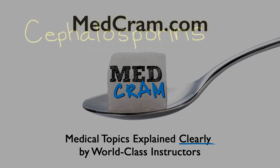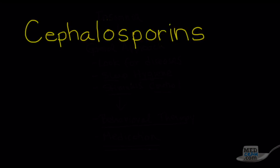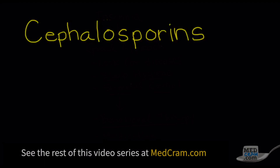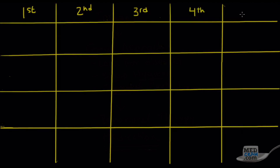Welcome to another MedCram lecture. We're going to talk about cephalosporins and specifically the different generations, some representative antibiotics in each class, and what are the unique things about those generations and their coverage. There are five generations of cephalosporins: the first, the second, the third which is the workhorse of the pneumonia scene, the fourth which has pseudomonal coverage, and then finally the fifth, which is an interesting generation.